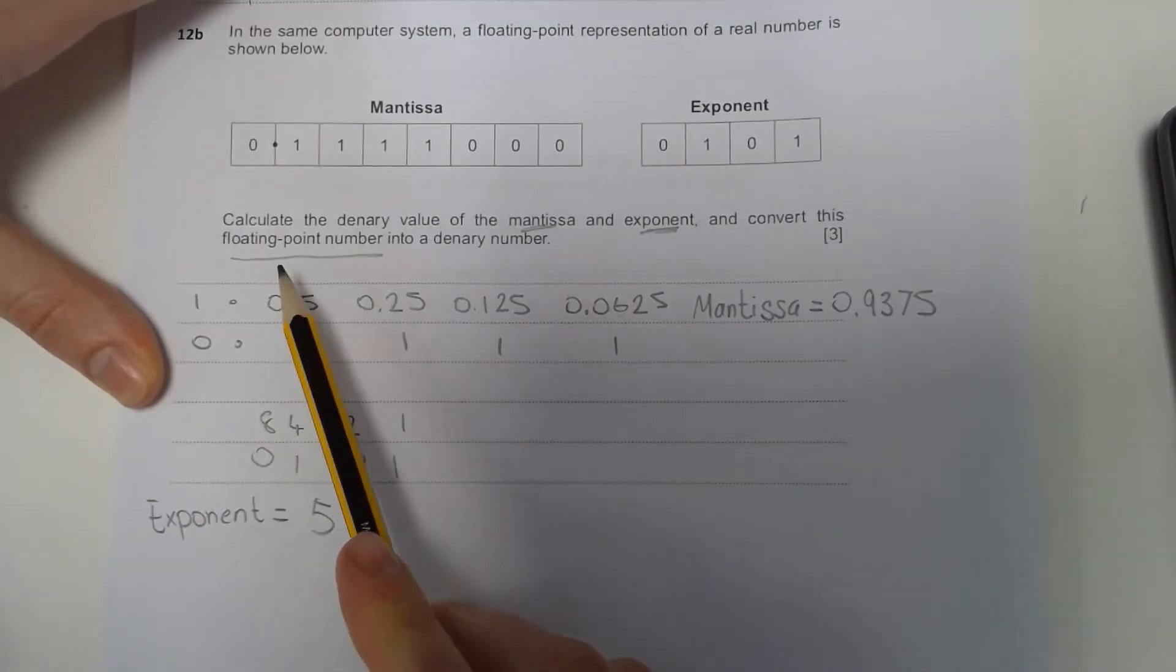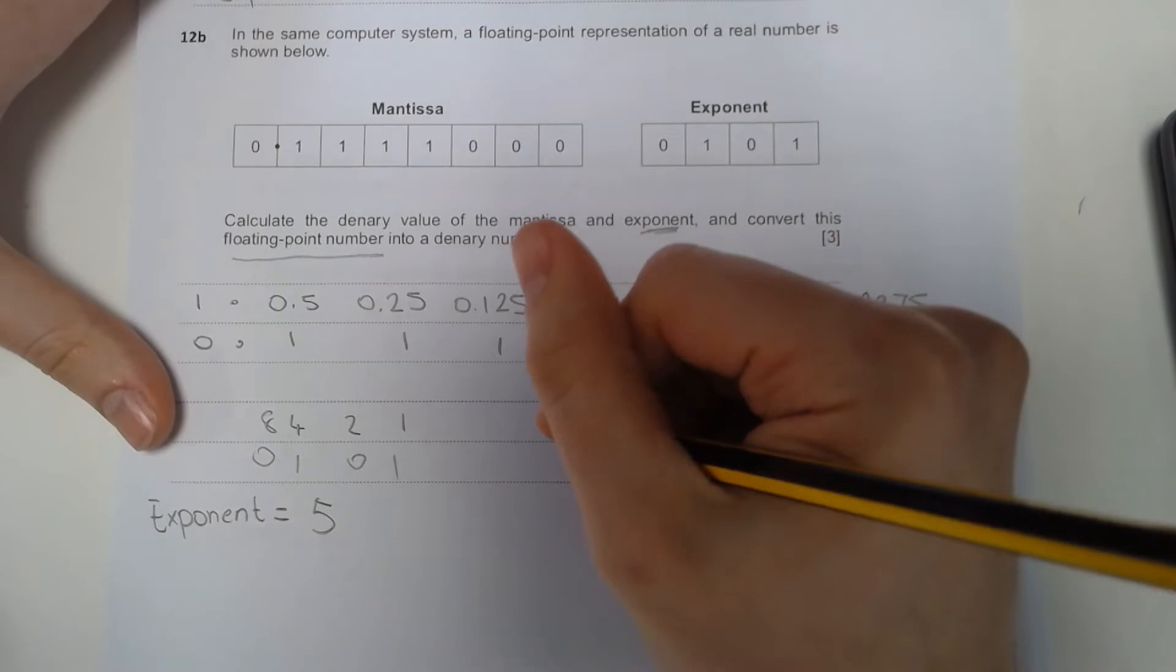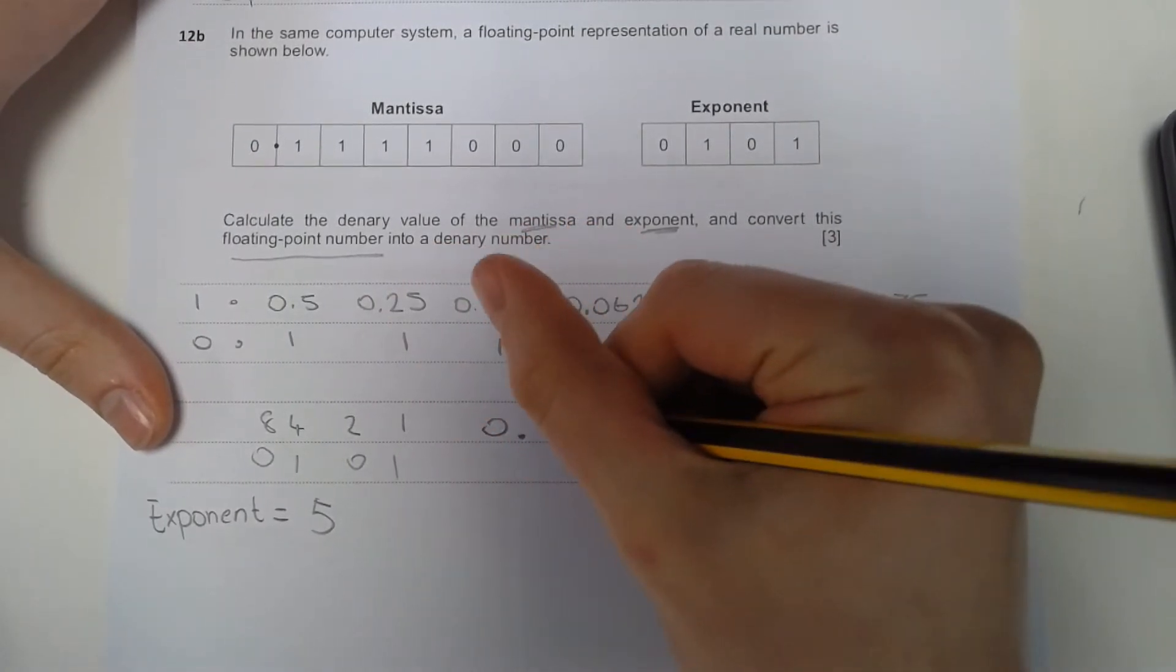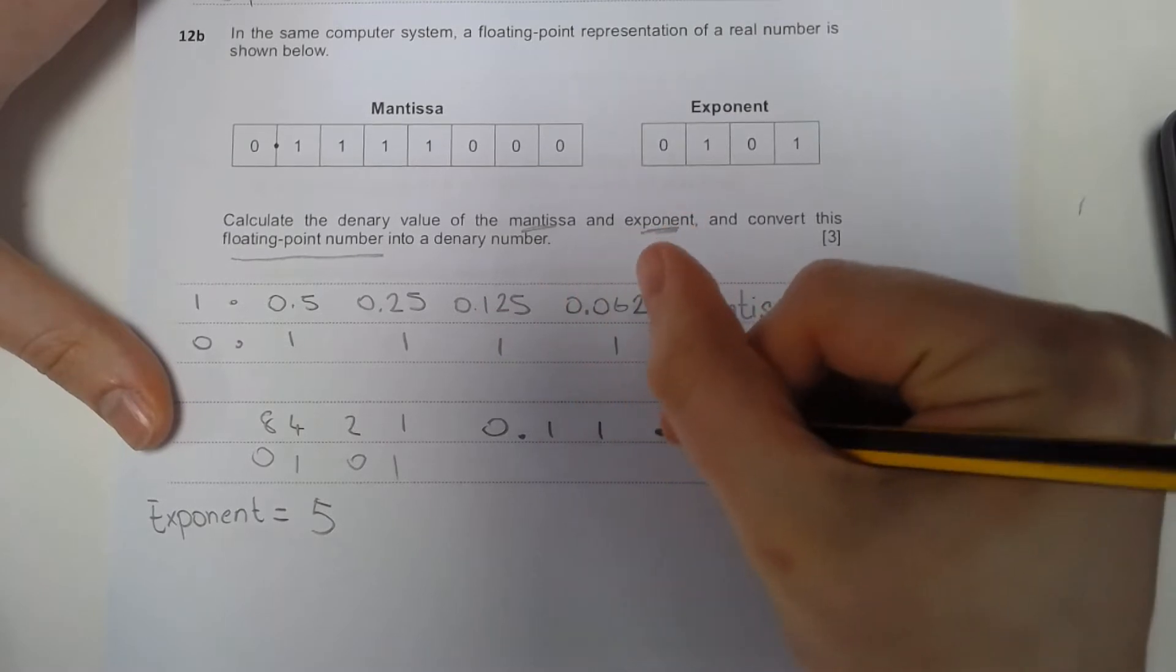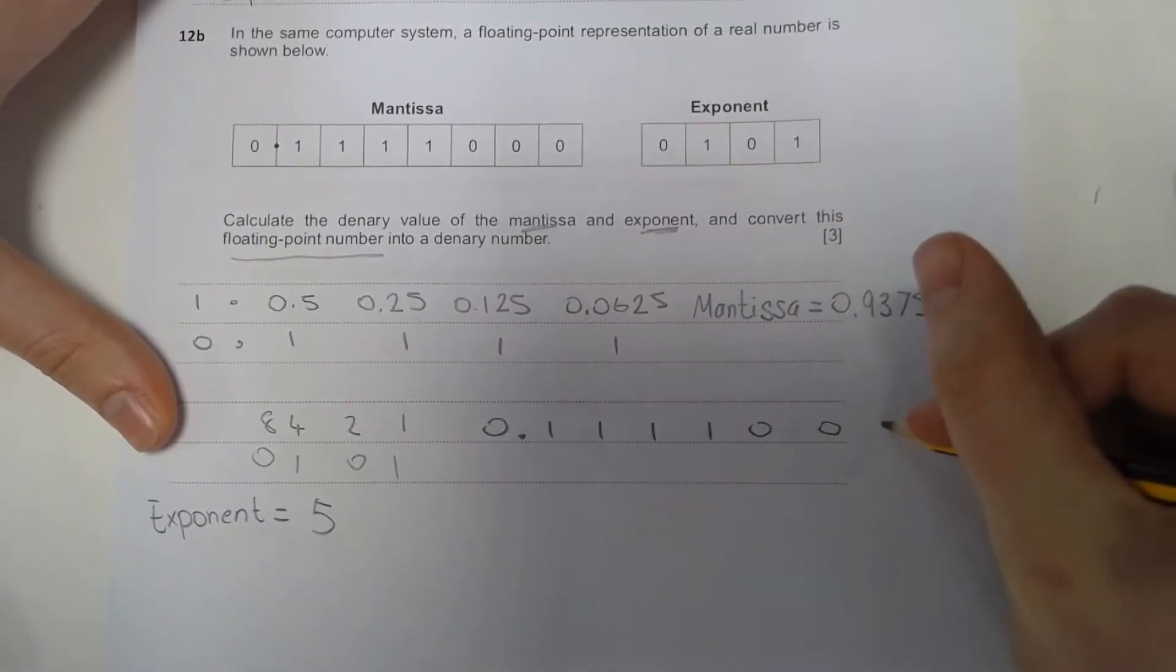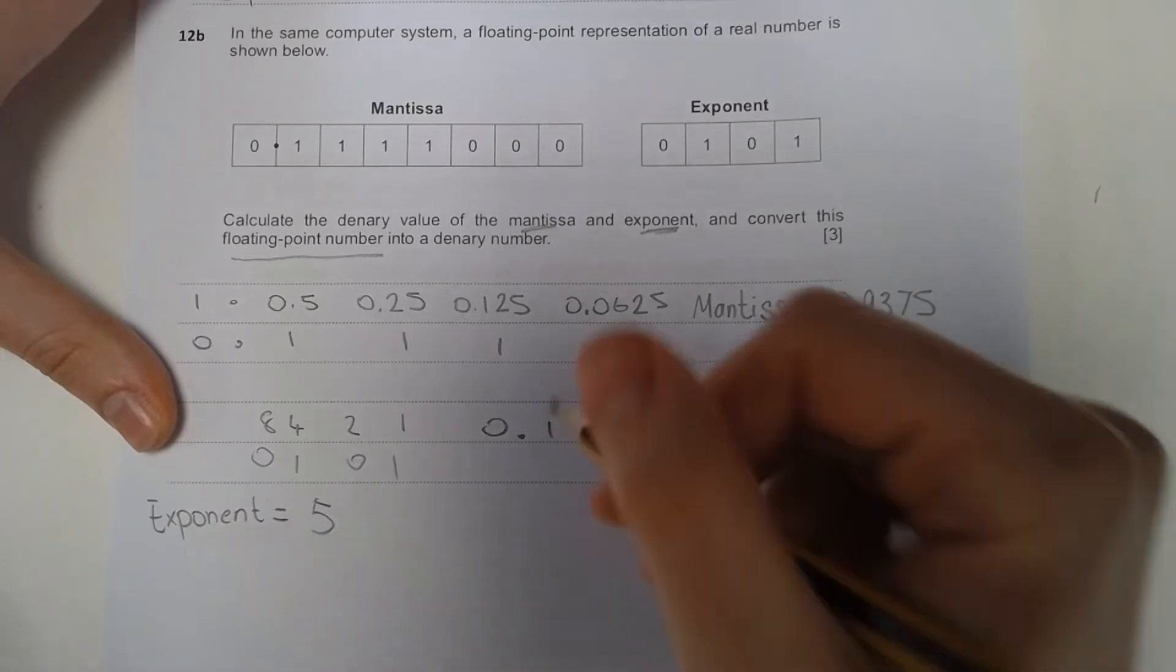And then the final thing it's asking us to do is our floating point. This is something that we should be familiar with. We're going to go through and just write out our values. We know we need to migrate our floating point at this point. So we have 5.